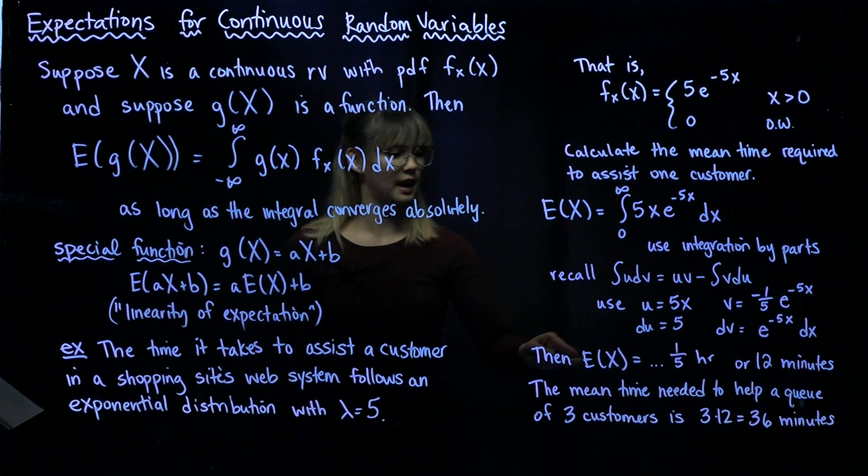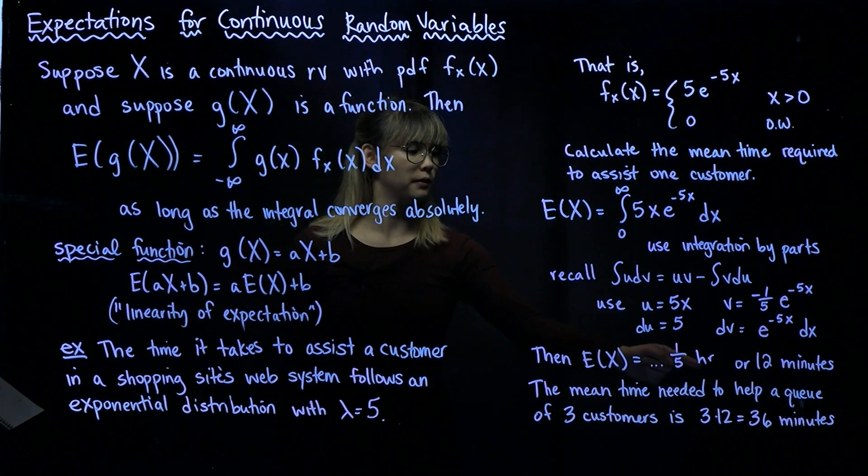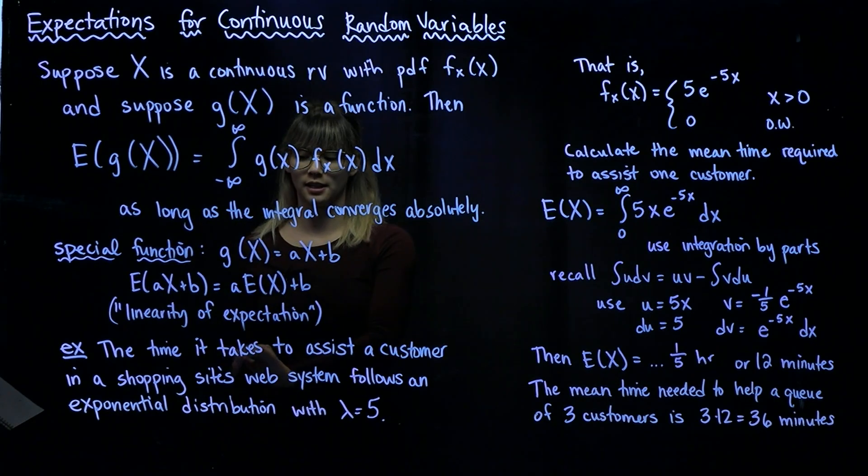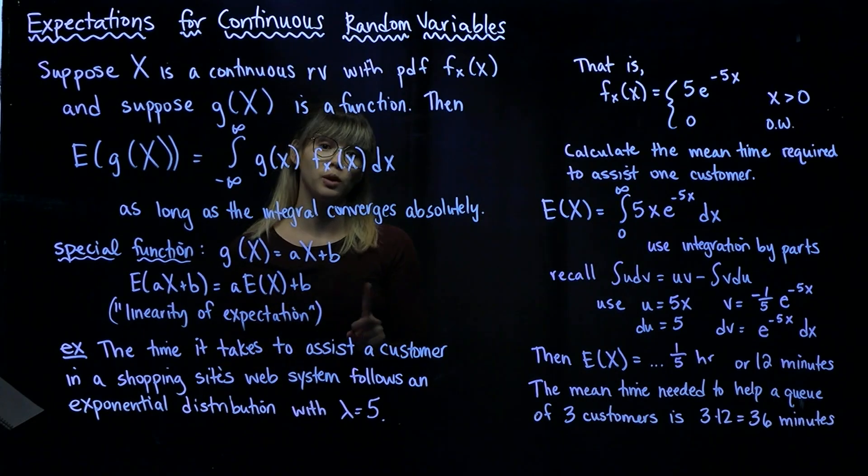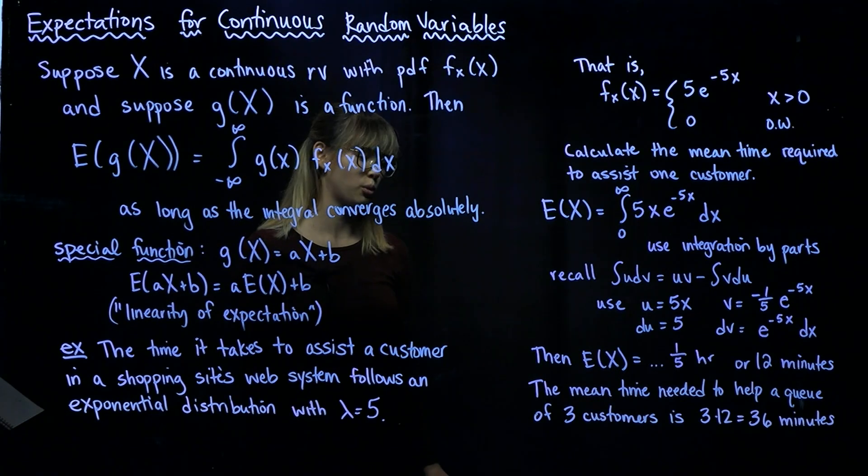So the expected value of X, with a little bit of number crunching, is equal to 1/5 of an hour, or 12 minutes. If you're working in this chat system and you're helping just one customer, the mean time needed to help this one customer is 12 minutes.